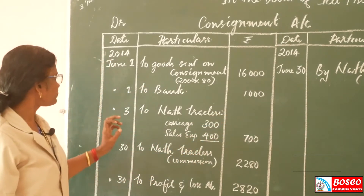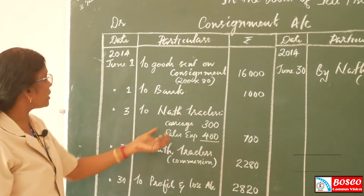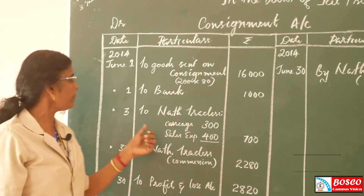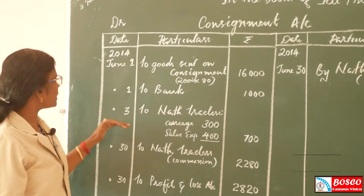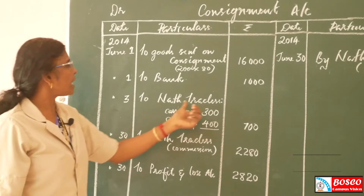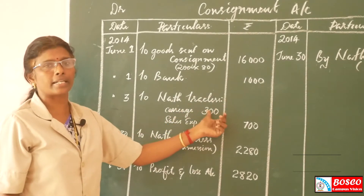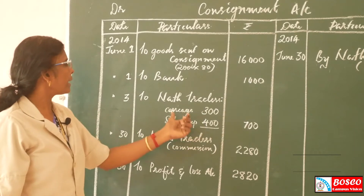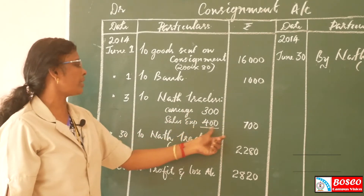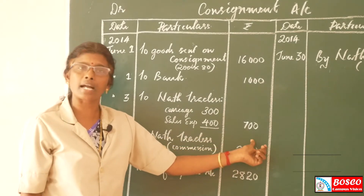Third item: expenses met by North Traders, the consignee. On 3rd June, we debit the consignment account and credit North Traders. North Traders paid Rs. 300 for carriage and Rs. 400 for sales expenses, making a total of Rs. 700.